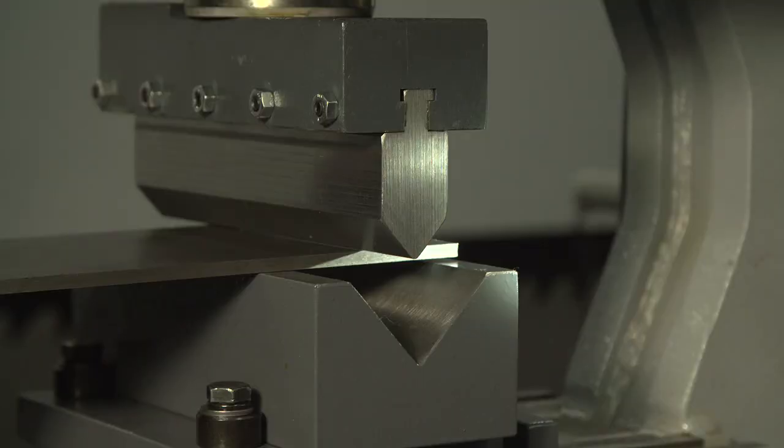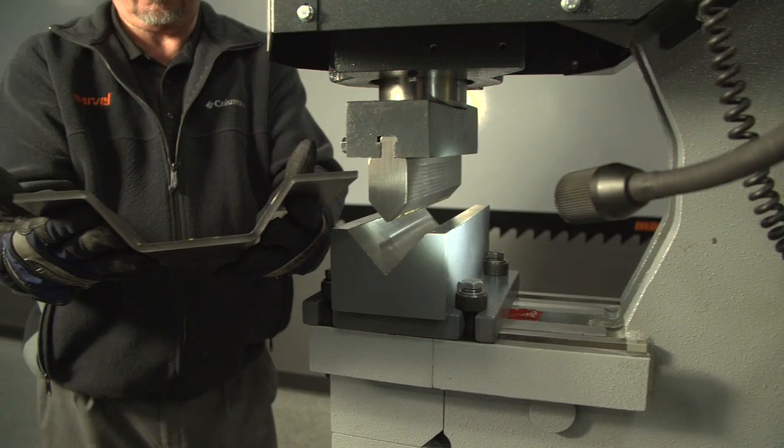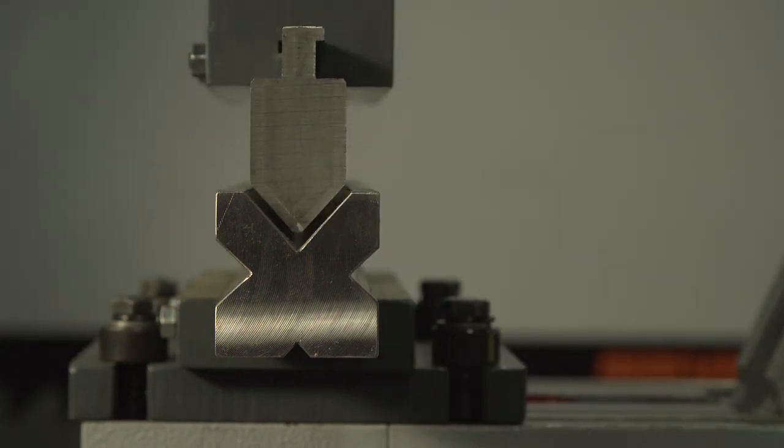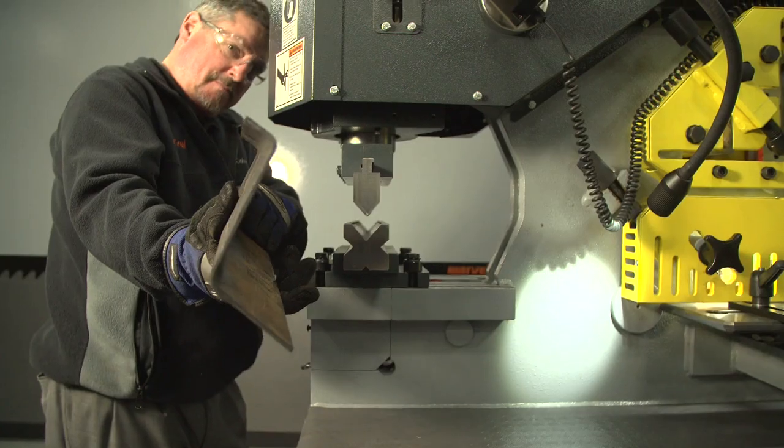The single V bending attachment allows for bending of heavier material. The multi V bending attachment provides four sized V bending options for thinner material and is also true press brake tooling.